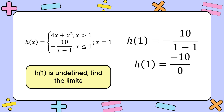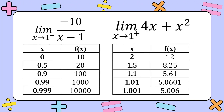Since any number divided by 0 is undefined, we must find the limits of the function. For the left-hand limit, the table shows values of x equal to 0, 0.5, 0.9, 0.99, and 0.999, with corresponding f of x values of 10, 20, 100, 1000, and 10,000 respectively.